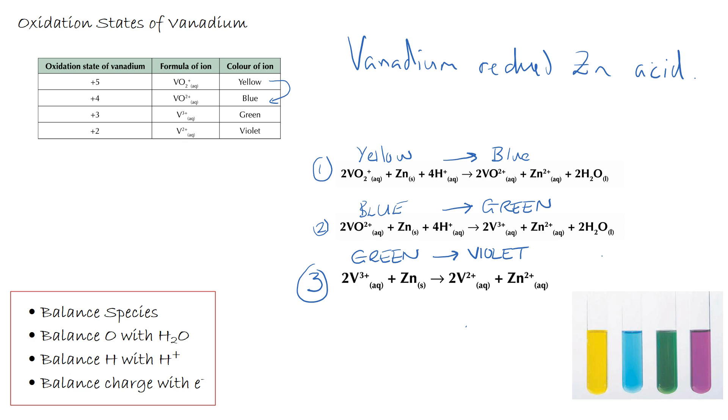Therefore if we start with a yellow VO2+ solution and we add Zinc along with a suitable acid, then we observe the three following changes: yellow to blue, blue to green, and green to violet. We need to be able to recall each of those three equations and also the colour changes observed.